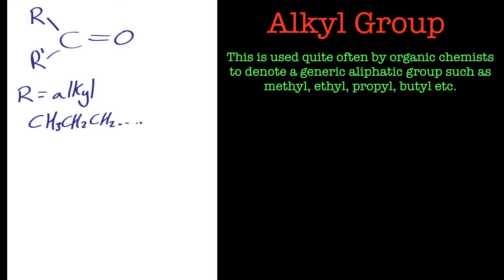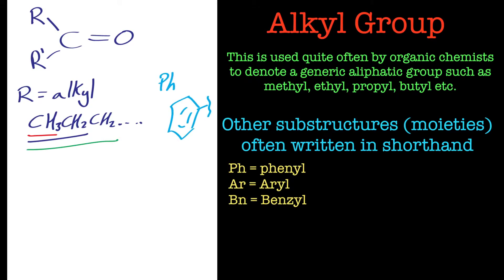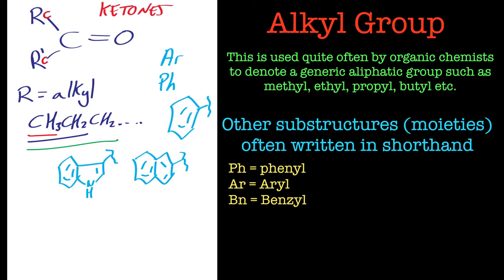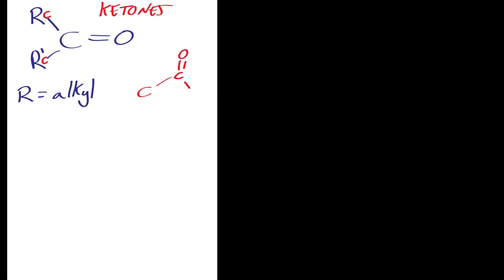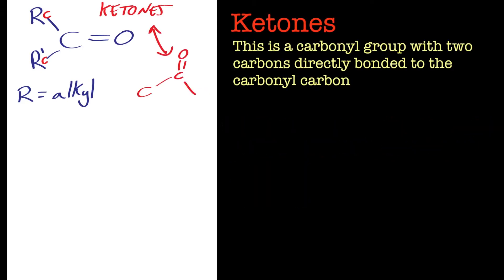Here we've got the alkyl group as R, but this just represents an aliphatic group. You can also have Ar to represent aromatic groups, and I've thrown a few here like the indole and anthracenes. A carbonyl with two carbons either side of it is called a ketone, and these are quite common functional groups.